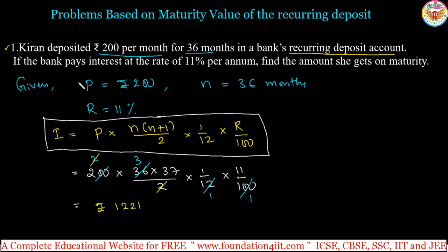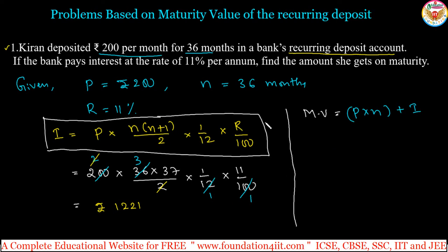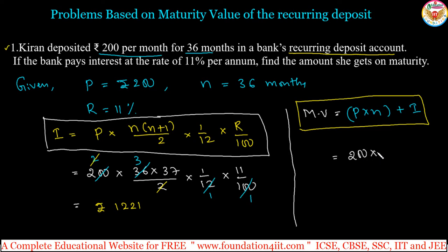Once you know the interest value, you can find out the maturity value. The formula for maturity value is: MV = P × N + Interest. Now calculating: P is 200, N is 36 months, so 200 × 36 plus interest of 1221.